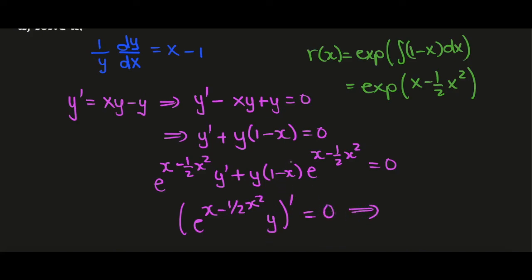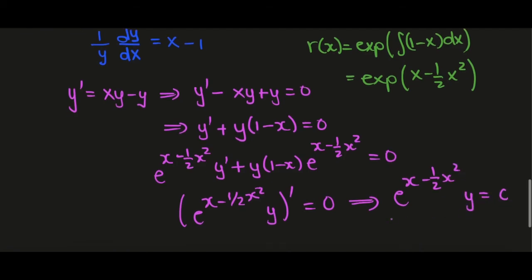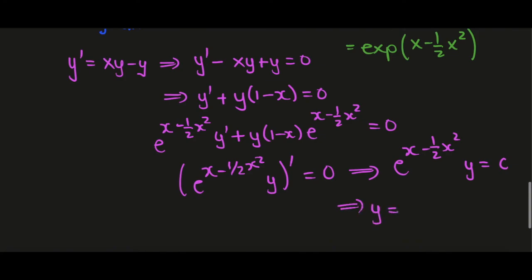We can integrate both sides and get e to the x minus 1/2 x squared times y is some constant, and now it's clear that y is just the exponential - let's put that constant out the front so we'll have c times an exponential of 1/2 x squared minus x.